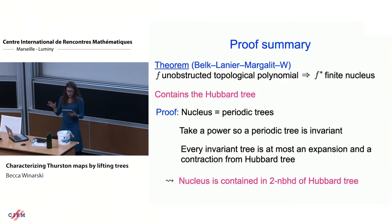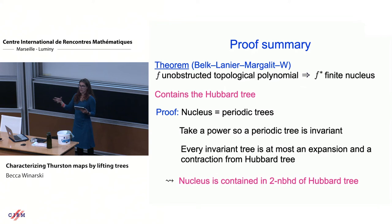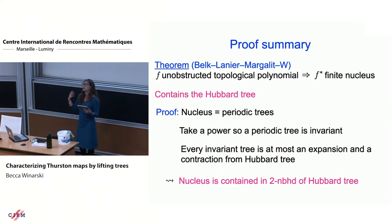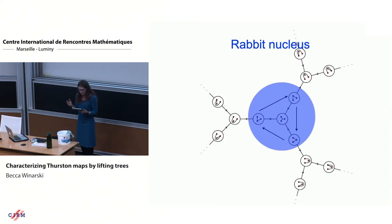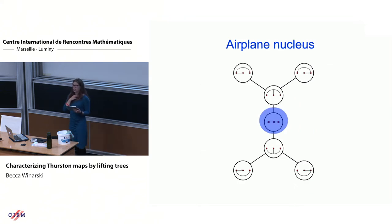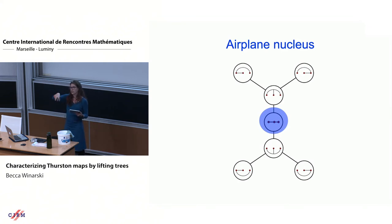To summarize the proof: if we have an unobstructed post-critically finite topological polynomial, it has a finite nucleus containing the Hubbard tree. The nucleus consists of periodic trees. We take a power so each tree of interest is invariant, and show it is at distance two from the Hubbard tree — one expansion and one contraction. The nucleus for the rabbit polynomial consists of the Hubbard tree and the three trees at distance one that cycle periodically. For the airplane polynomial, the nucleus is exactly the Hubbard tree, so all trees eventually lift to the Hubbard tree.